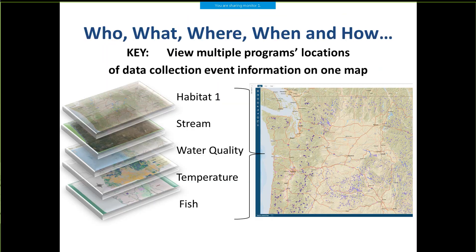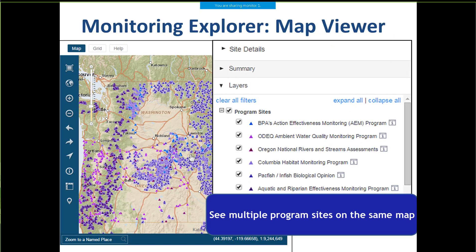The key to the Monitoring Resources map viewer is that we can view multiple programs' locations of data collection event information on one map, along with standard GIS layers that are downloadable. You can download information about certain fish layers and combine those with temperature data or water quality data. At the moment we have six programs in our system, and you can see that some of them are working in very similar places. You can view multiple program sites on the same map.